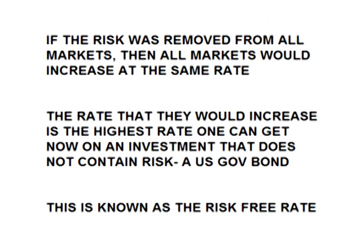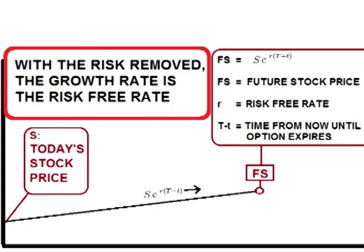The no riskless arbitrage argument tells us that if it were possible to remove the risk from all assets, then all assets must increase at the same rate, or one could engage in riskless arbitrage. In other words, with the risk removed, if assets did not grow at the same rate, then one could place offsetting trades and make a profit without any risk of losing money. Therefore, with the risk removed, the rate of return on an asset must be the risk-free rate — the rate one can get on a risk-free investment such as a government bond. This means the stock would drift up at the risk-free rate, growing at a constant rate the same as any other asset with no risk.